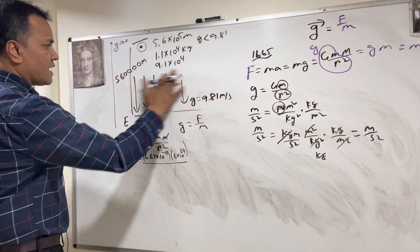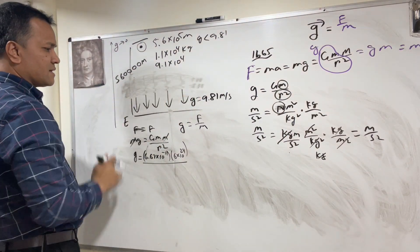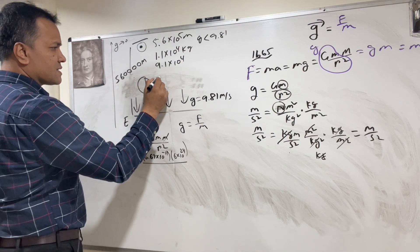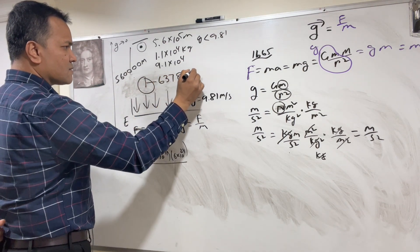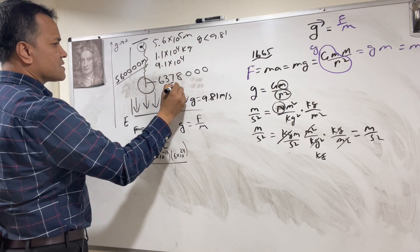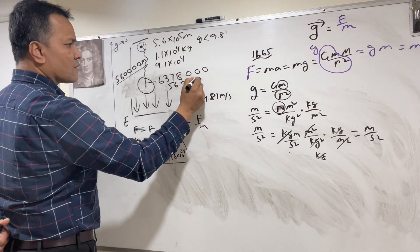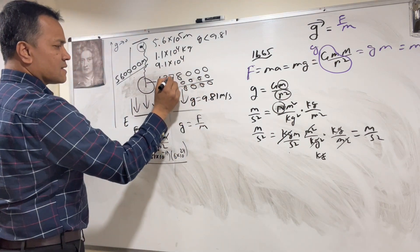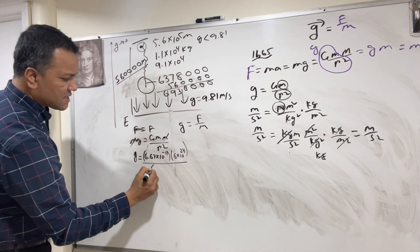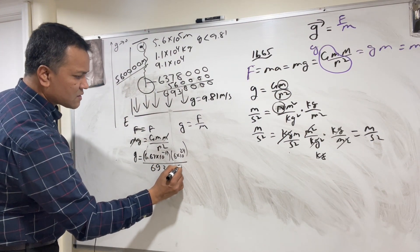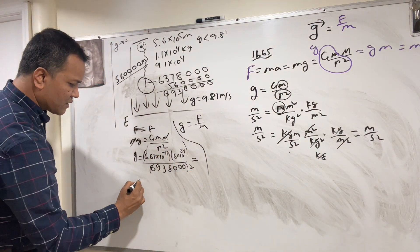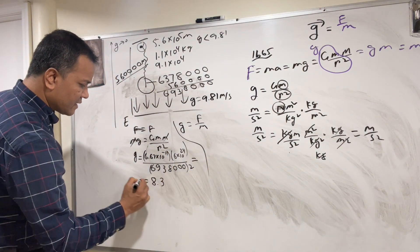To find r, we add two quantities: the radius of the Earth, which is 6,378,000 m, plus the altitude above the Earth, which is 561,234 m, giving r = 6,938,000 m. Squaring that and computing gives g ≈ 8.3 m/s².